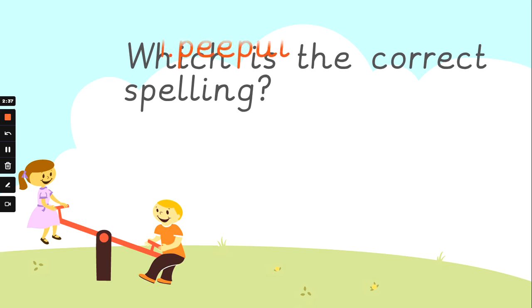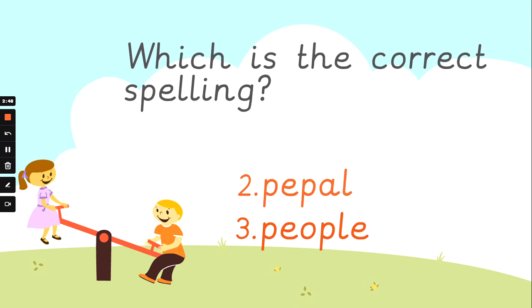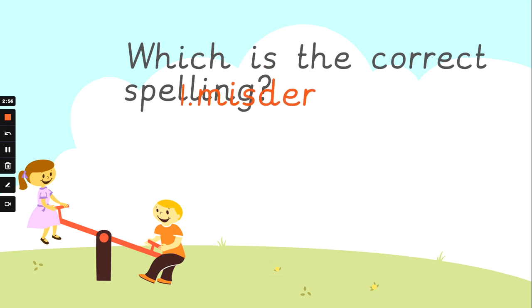How about people? People. We've done lots of this in class, haven't we? Can you spot the correct way to spell people? Is it number one, number two, or number three? Number three. P, E, O, P, L, E. And Mrs. Anderson says peopple to help you in class, doesn't she?